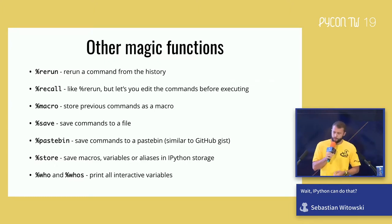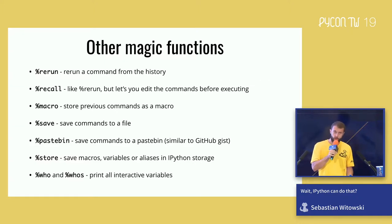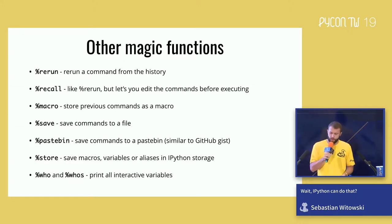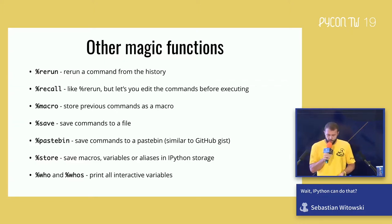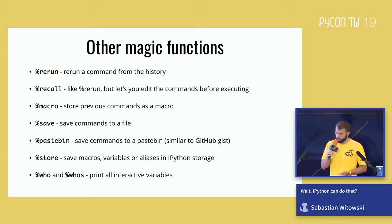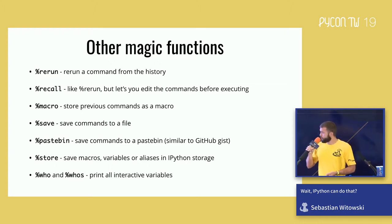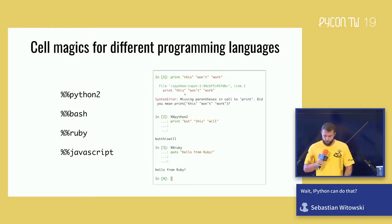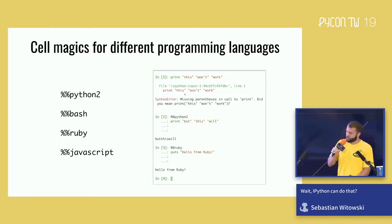There are many other magic functions you can use to, for example, rerun or edit commands before running, save commands as a macro, save them in a file or a pastebin to share with colleagues, save macros, variables, or aliases in a database so you can retrieve them in a different IPython session, or print a list of variables and functions you've defined so far.